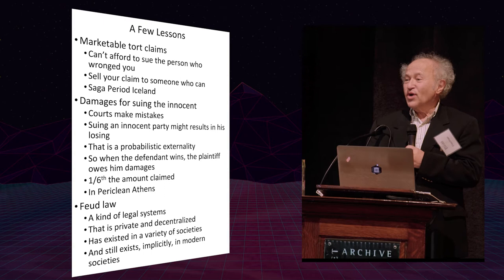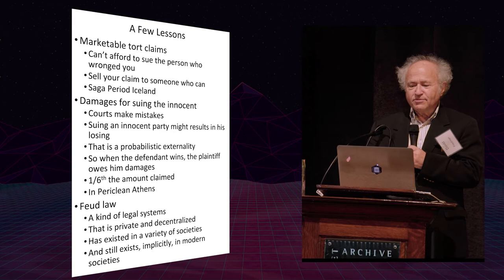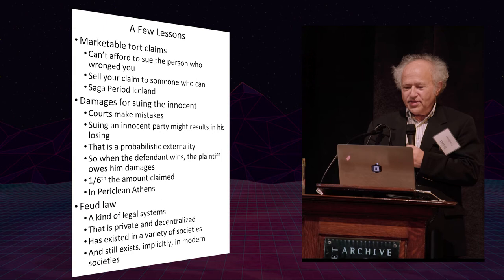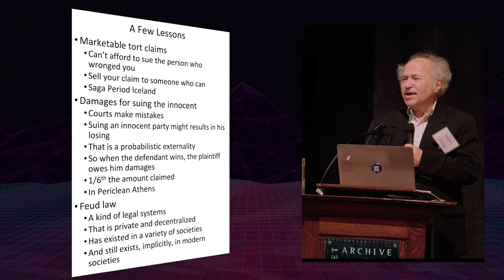The rule was one-sixth the amount that had been claimed by the plaintiff in Pericles in Athens. So this is another example of an interesting idea out of a rather different legal system. I like to describe the Athenian legal system as the invention of a mad economist because it has multiple ideas which are very clever ideas that would probably appeal to the kind of people in this room and might or might not work.